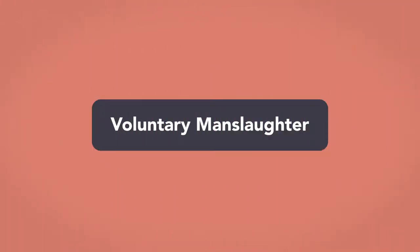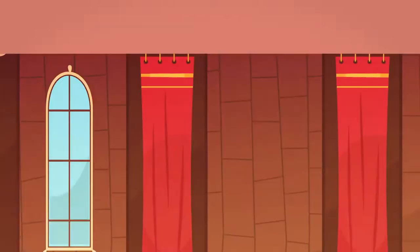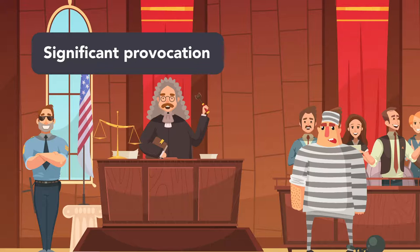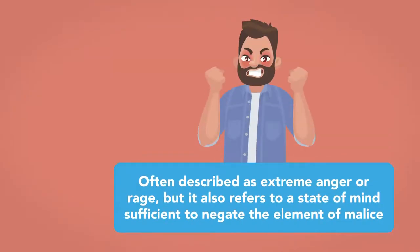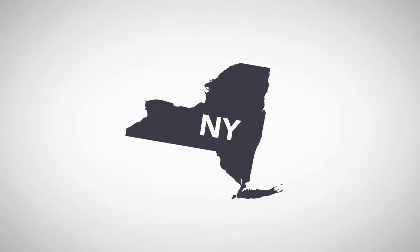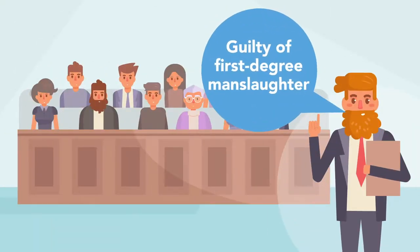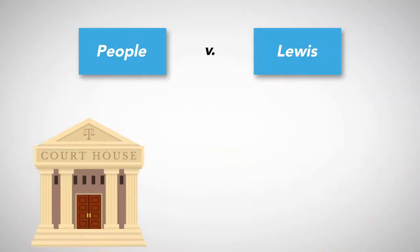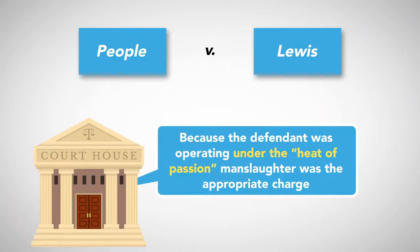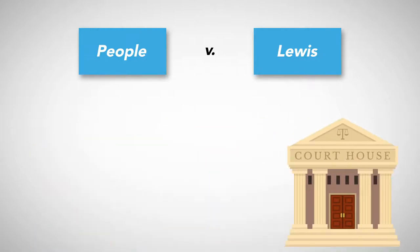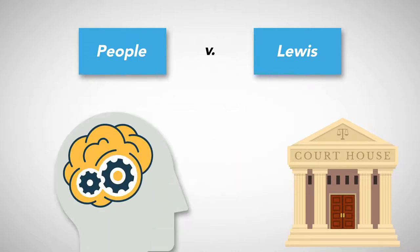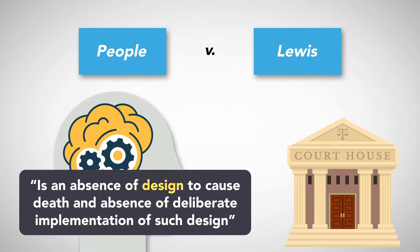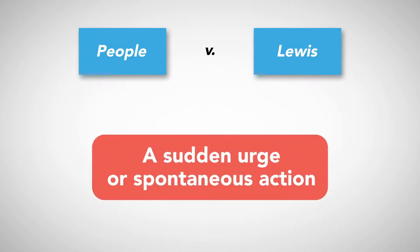Voluntary manslaughter. To reduce an intentional homicide from murder to manslaughter, the defendant can show that there was significant provocation, and that the defendant acted in the heat of passion. Heat of passion is often described as extreme anger or rage, but it also refers to the state of mind sufficient to negate the element of malice. In the New York case People v. Lewis, a jury found a defendant guilty of first-degree manslaughter after he fatally shot his girlfriend during an argument when she accused him of infidelity. The court explained that because the defendant was operating under the heat of passion, manslaughter was the appropriate charge. The court observed that heat of passion does not require a violent rage, but the existence of a state of mind that demonstrates an absence of design to cause death, an absence of deliberate implementation of such design, which is indicative of a sudden urge or spontaneous action.